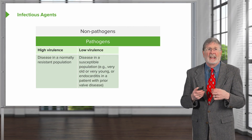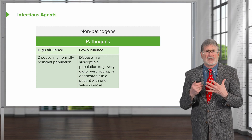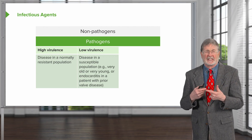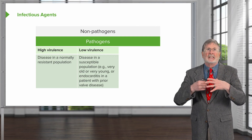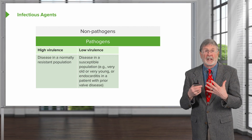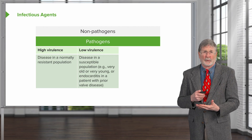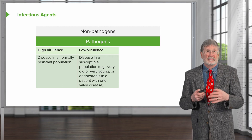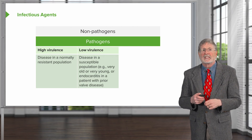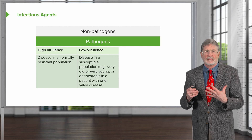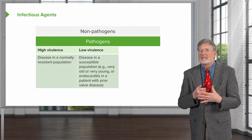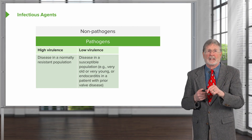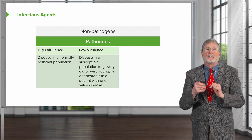Then there's low virulence. These are pathogens — microbes, viruses, etc. — that will cause disease only in a susceptible population, that is to say someone who has an incomplete or not well-functioning immune system, such as the very young and the very old. You can also have a low virulence streptococcal bacteria that only binds to previously injured heart valves. Streptococcus viridans is very low virulence, but it knows how to stick to a diseased valve extremely well. That makes it a low virulence microorganism.